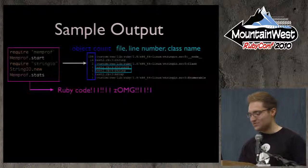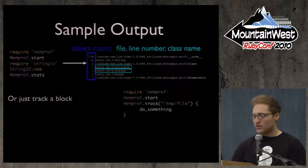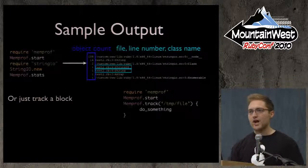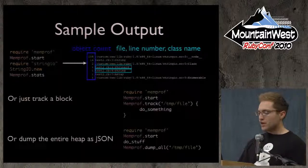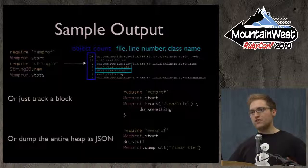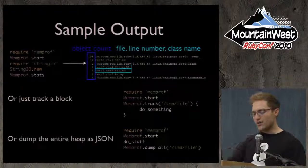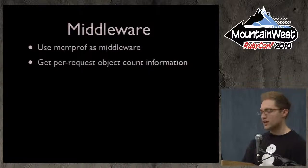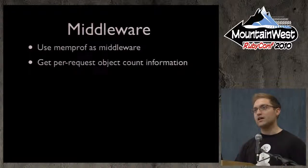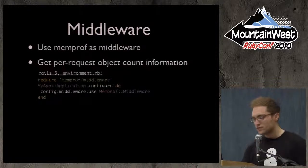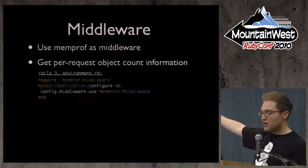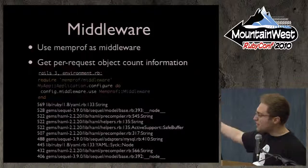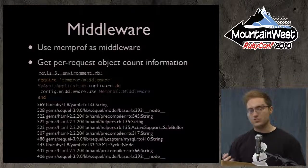You can also track a block: call Memprof.start_track, pass it a file, do stuff, and track memory allocations and leaks for that specific block. Or you can dump the entire heap as JSON, load it into the web UI that was demoed at the Lightning Talk. There's also a middleware component — insert Memprof as middleware to get per-request object count information, so you can see per-request that you're leaking 100 controllers or whatever. You install the Memprof gem, require memprof/middleware, set up some middlewares, and each request gets output showing object count, file, and line for memory leaks.